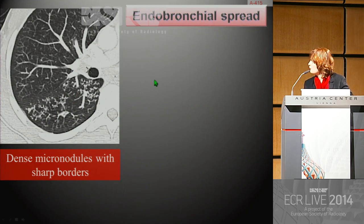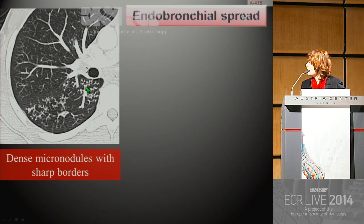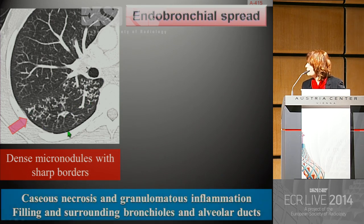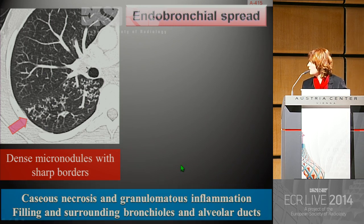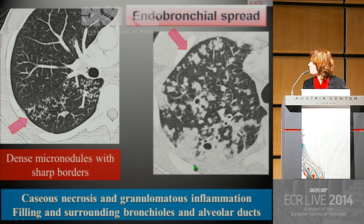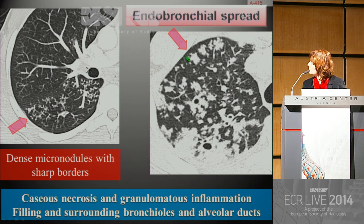This leads to endobronchial spread of necrotic material that may involve the same or overlapping lobe. Endobronchial spread of TB is characterized by dense micronodules with sharp borders, located in a centrilobular distribution that respects the subpleural area, and is responsible for tree-in-bud appearances. This corresponds to caseous necrosis and granulomatous inflammation filling and surrounding respiratory and terminal bronchioles and alveolar ducts, progressively involving peripheral alveoli, resulting in sublobar and subsegmental involvement.